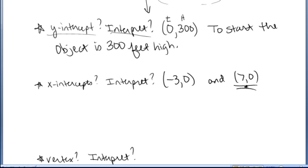Let's start with 7, 0. Again, it's t comma h. So t is 7, h is 0. So it's 7 seconds, 0 feet above the ground. So after 7 seconds, the object is 0 feet above ground. So it hit the ground. The object hits the ground.